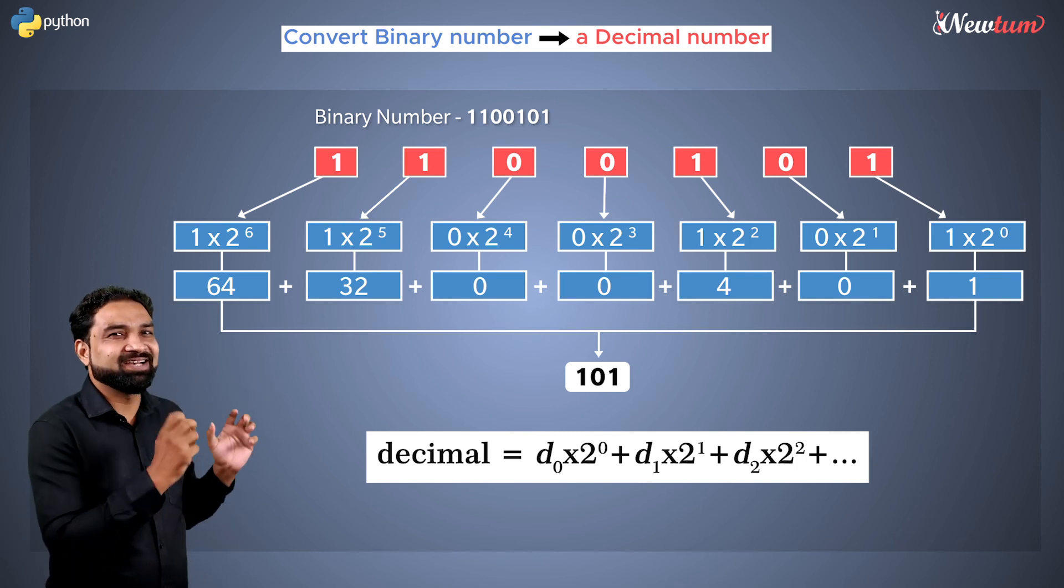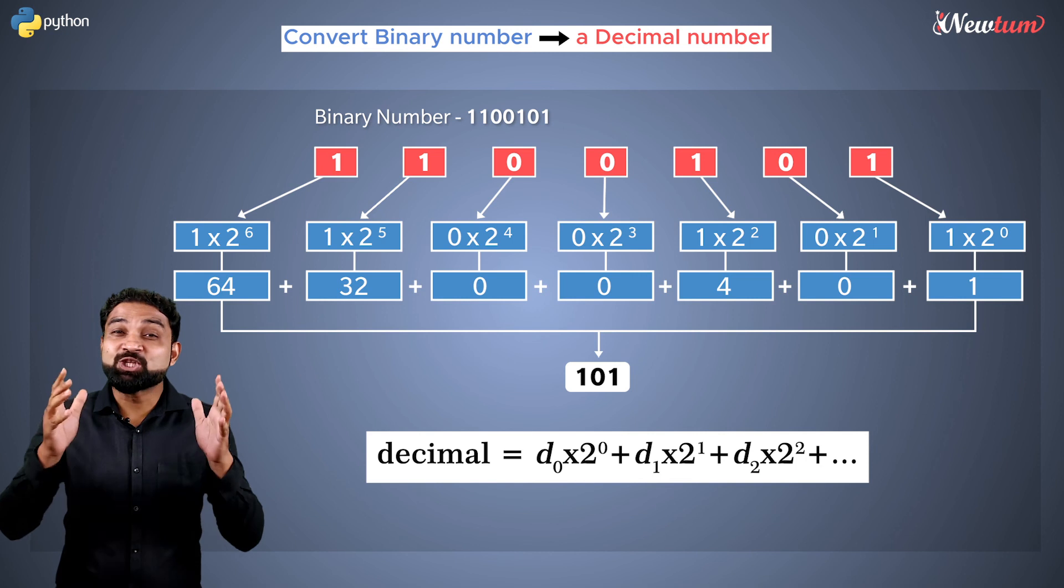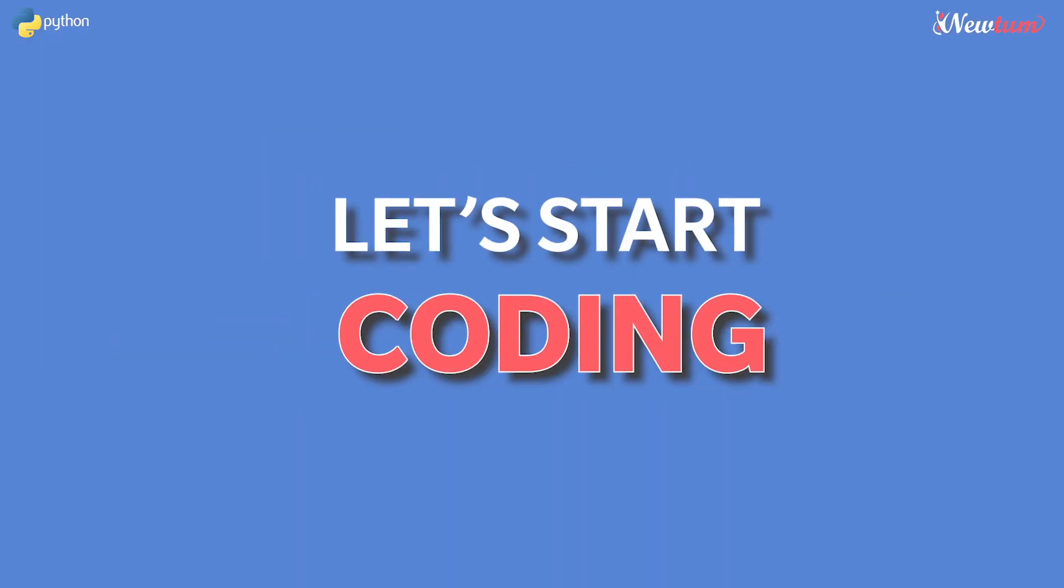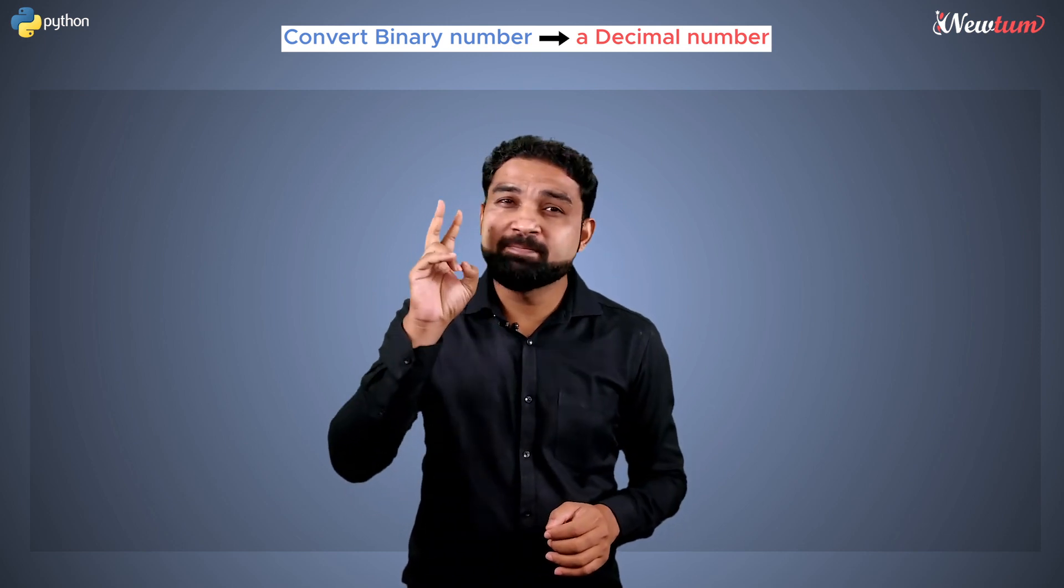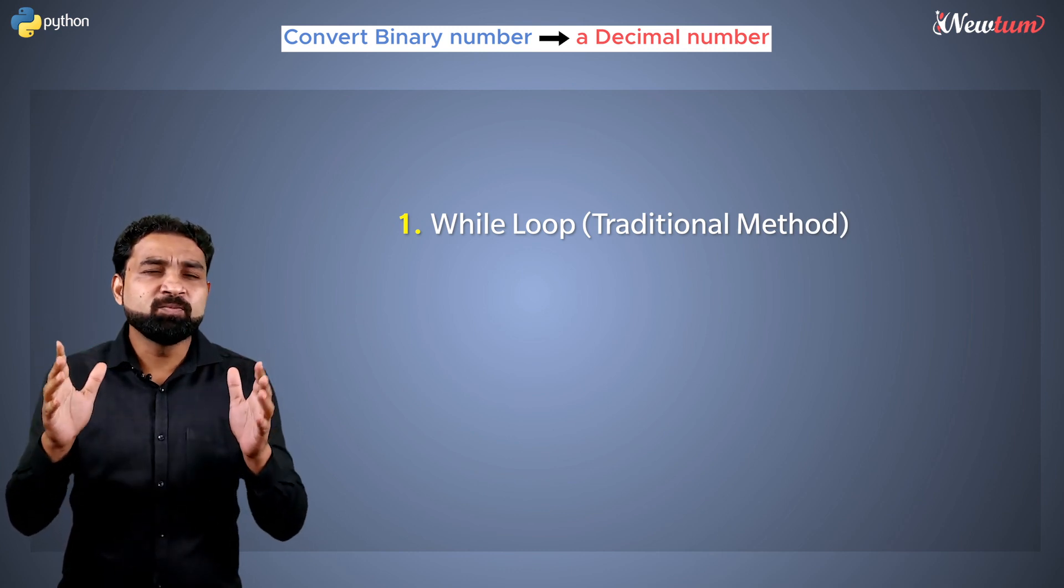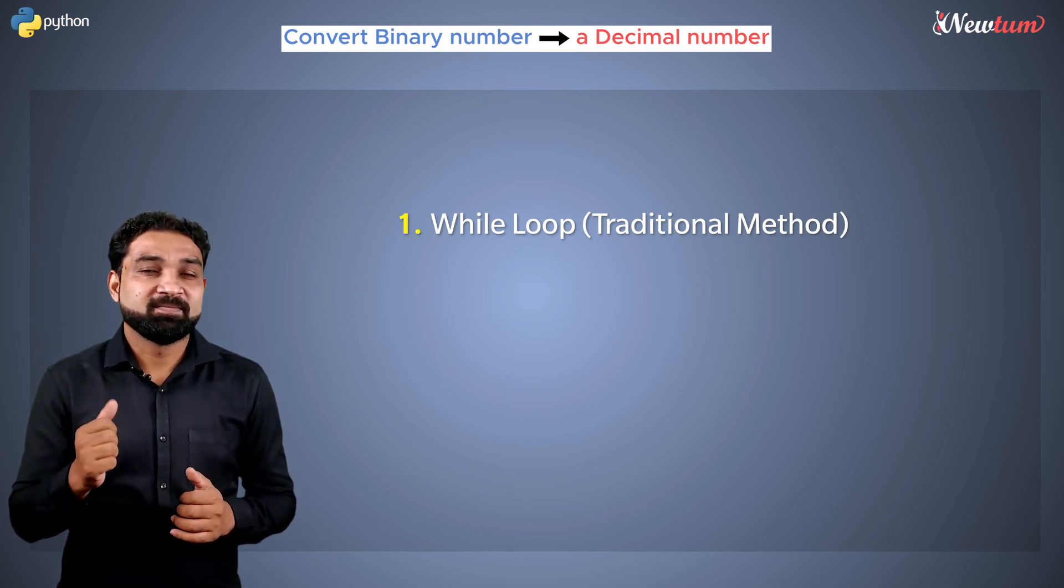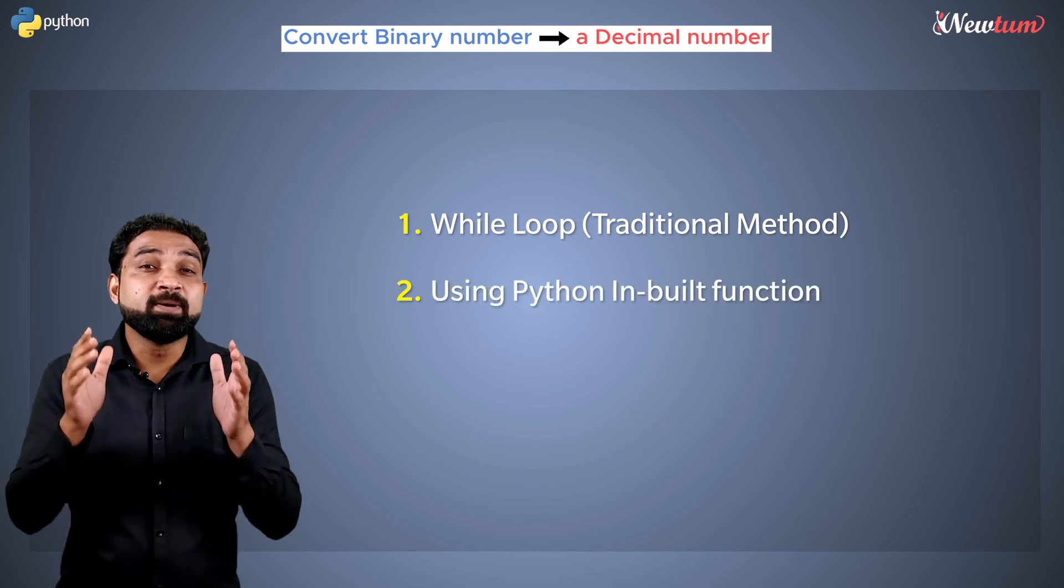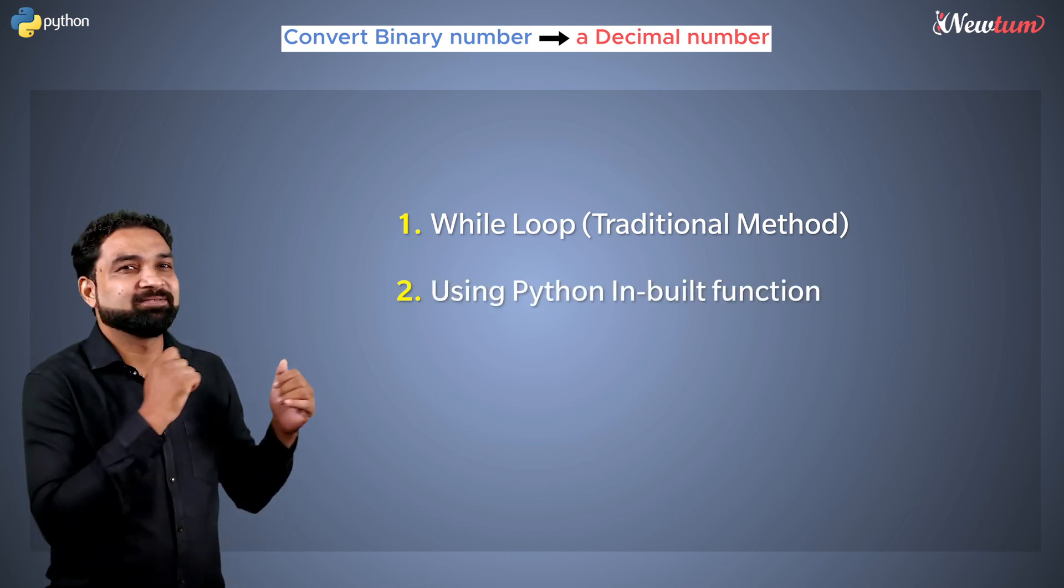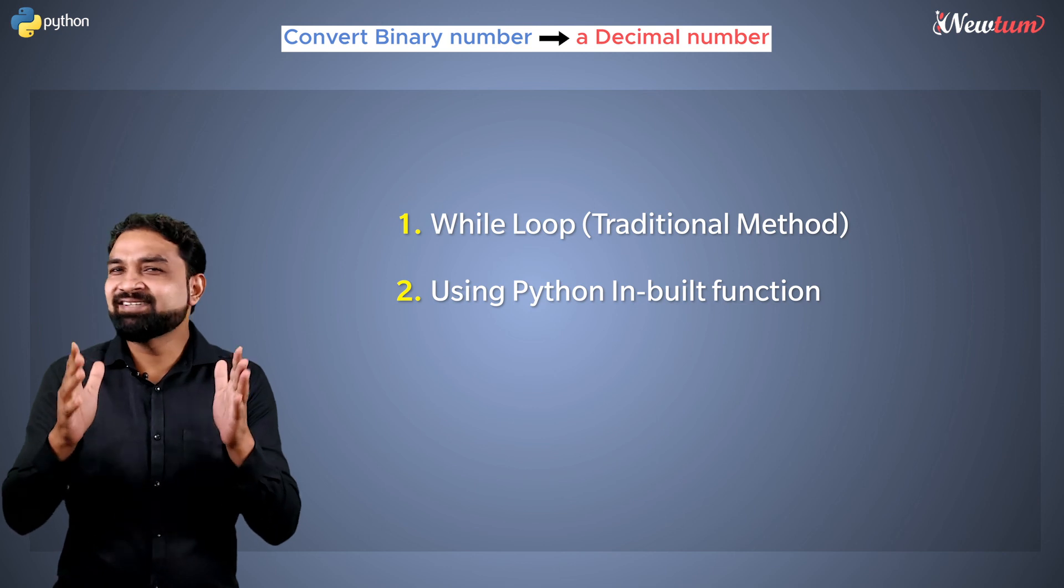Since our formula is ready, it's time to do the actual coding. We can write binary to decimal program using two different methods. The first is using while loop, more of a traditional method. Then we will write the same program using the inbuilt function provided by Python. Let's get started.